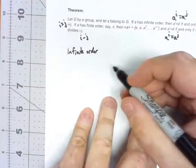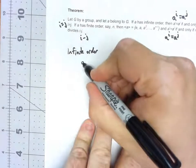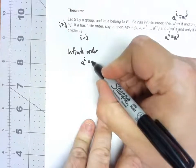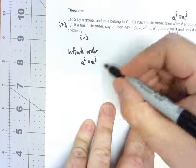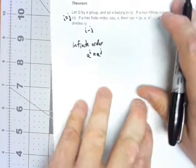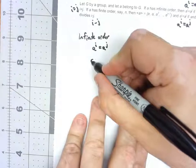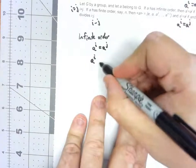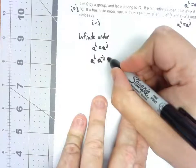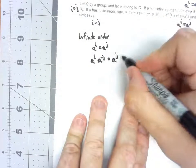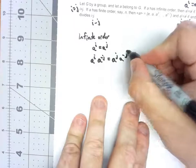Let's think about that. If A sub I equals A sub J, let's go ahead and multiply both of those things on the right by A to the minus J. So I'd have A to the I times A to the negative J equals A to the J times A to the negative J.